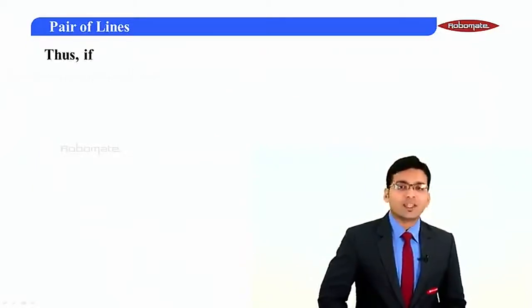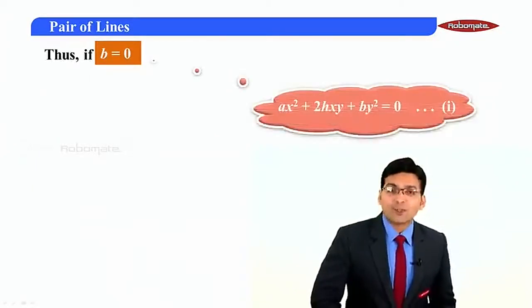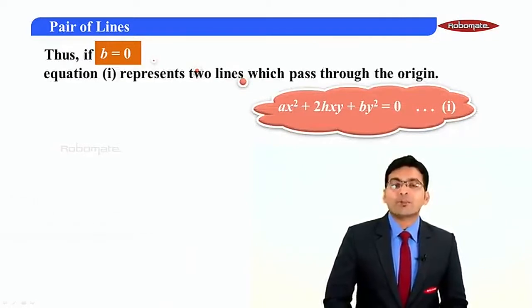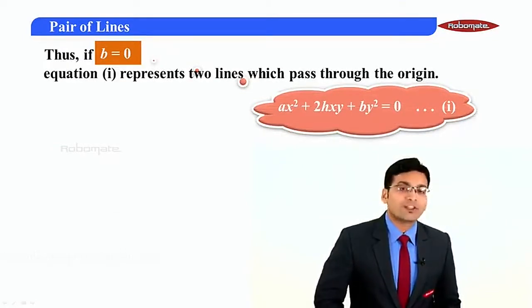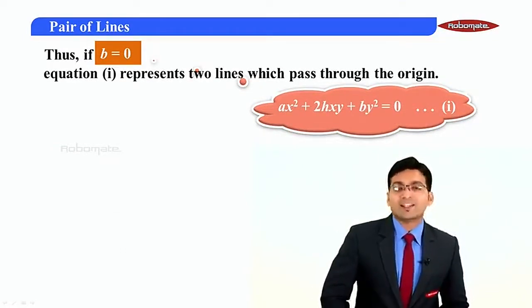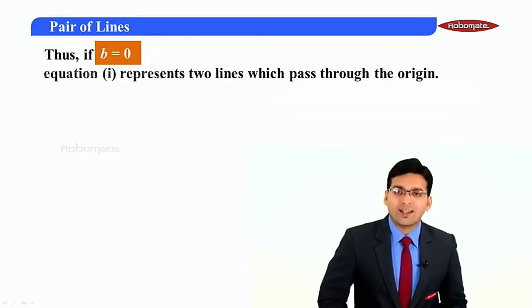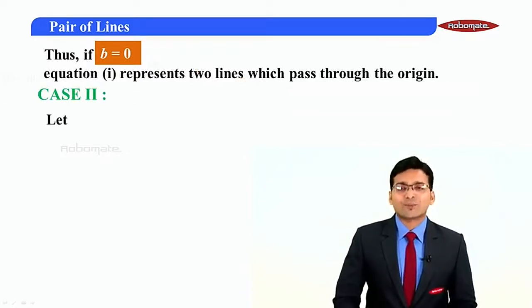Therefore, if b = 0, the equation ax² + 2hxy + by² = 0 represents two lines which pass through the origin. Let us consider Case 2.